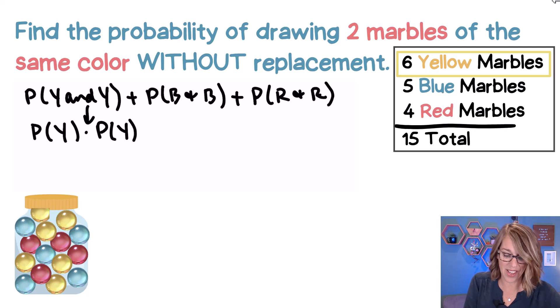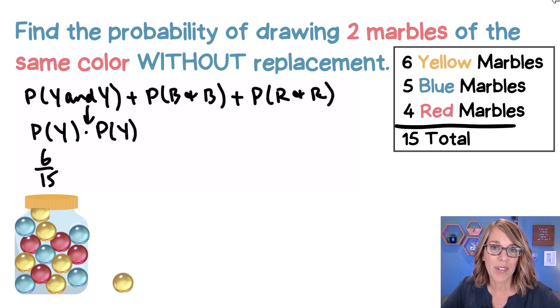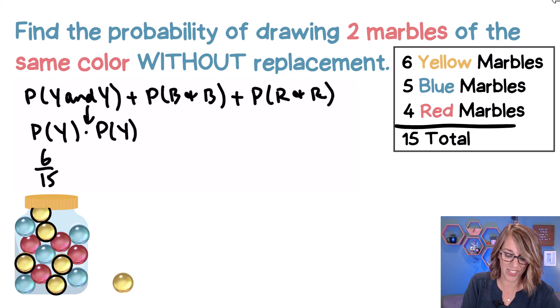But I'm going to go ahead and draw that marble and set it aside before I do the second one. This is the probability given that the first one was a yellow. So now I go back to my jar of marbles and there are five yellow marbles left. So that second probability, there are five marbles to choose from.